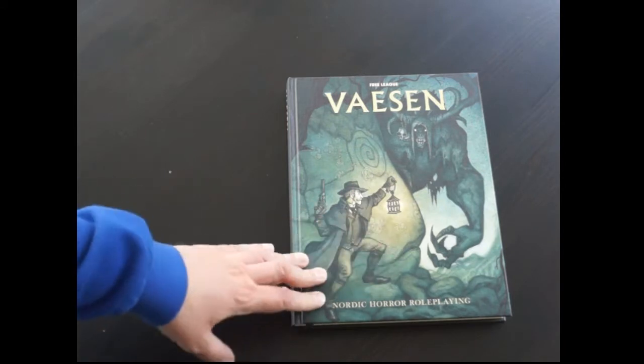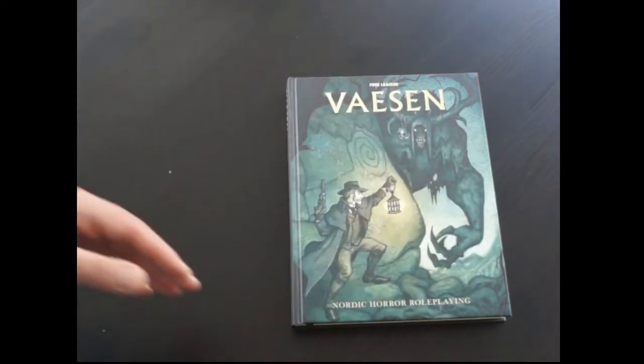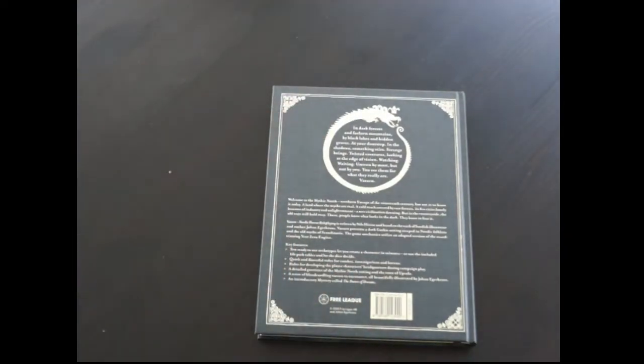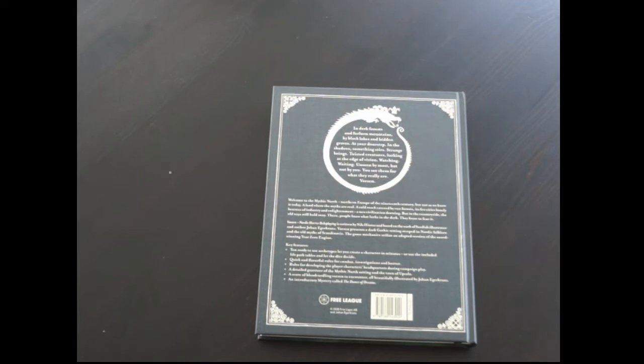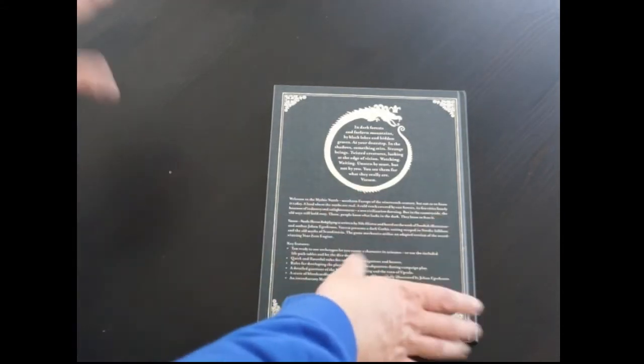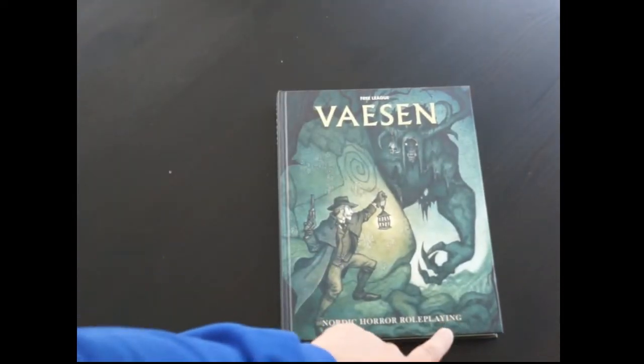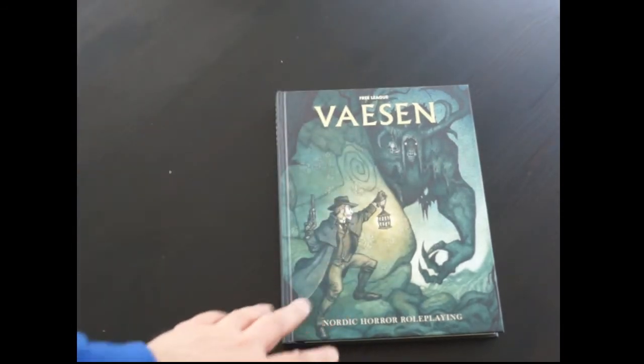Let's look at this little book. First thing, artwork is incredibly evocative on the front. Looking at the back: in dark forests, forlorn mountains, by black lakes and hidden groves, at your doorstep and in the shadows, something stirs. Strange beings, twisted creatures lurking at the edge of vision, watching, waiting, unseen by most but not by you. Welcome to the mythic north, northern Europe in the 19th century, but not as we know it. This is a land where the myths are real.